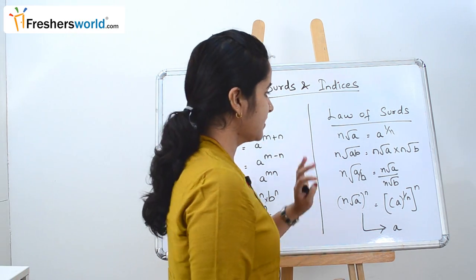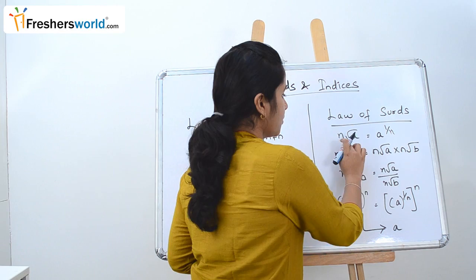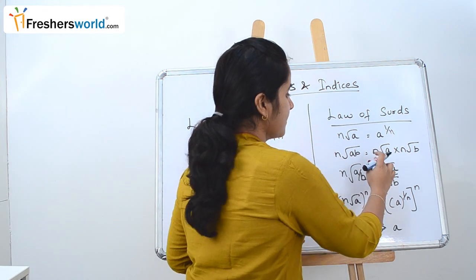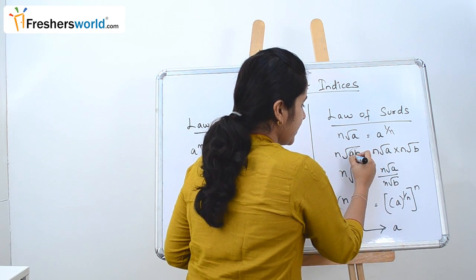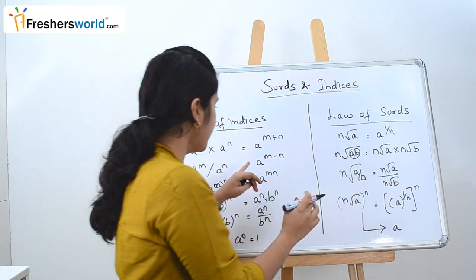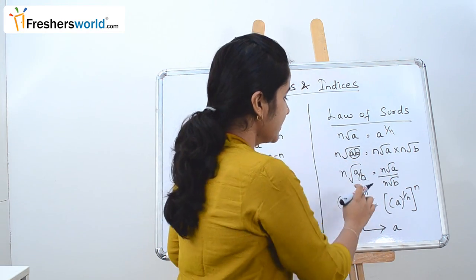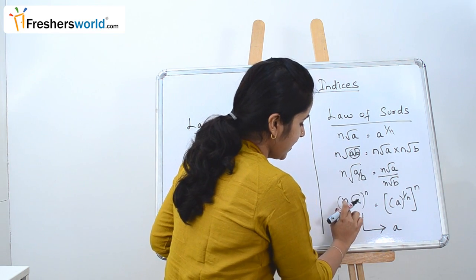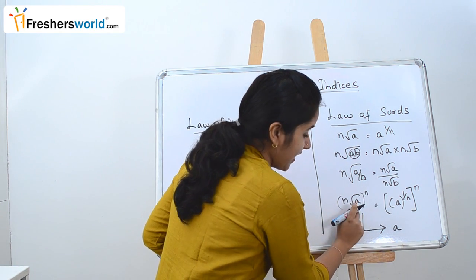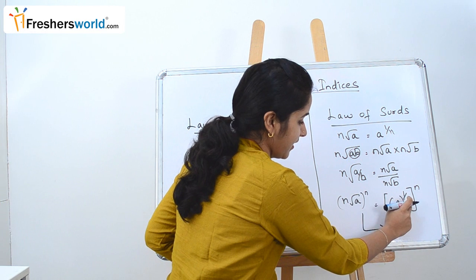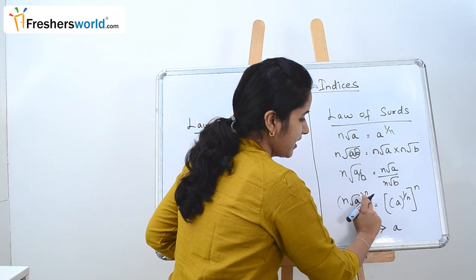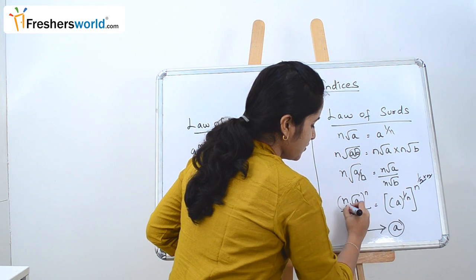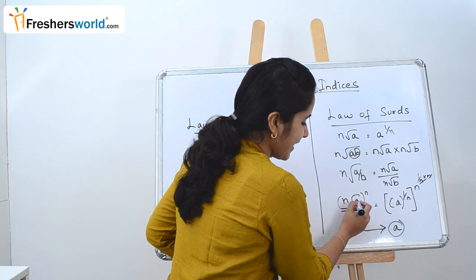In the case of laws of surds, it's essentially square roots. The n-th root of a is nothing but a^(1/n). The n-th root of ab equals the n-th root of a times the n-th root of b. Similarly, the n-th root of (a/b) is the n-th root of a divided by the n-th root of b. For (n-th root of a)^n, rewrite it as (a^(1/n))^n — the 1/n and n cancel — so the value becomes simply a.